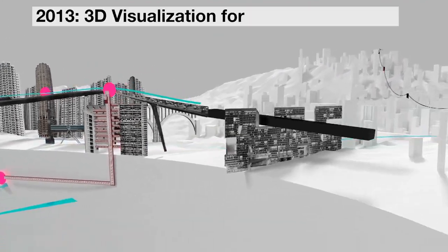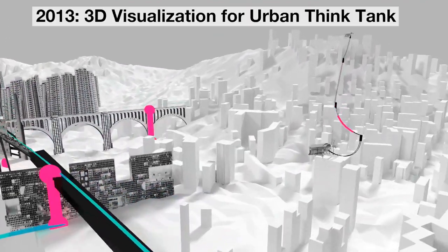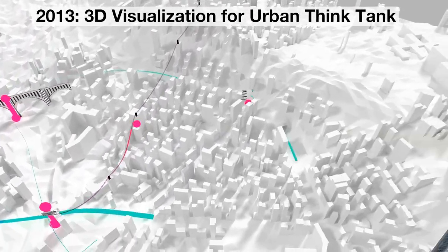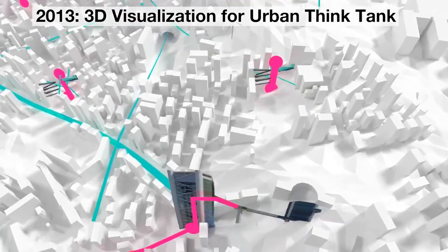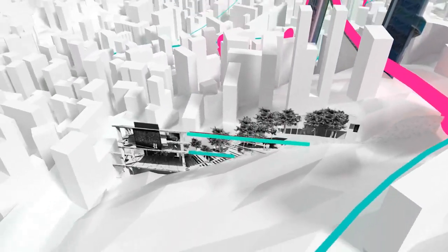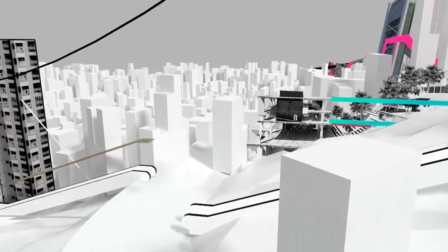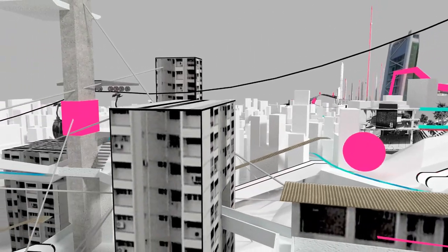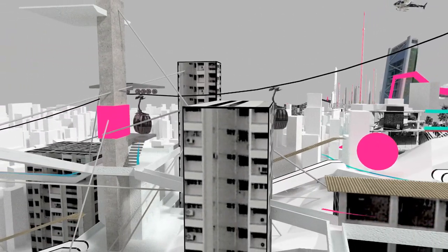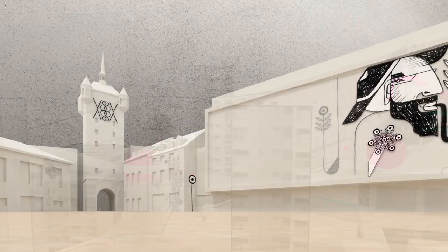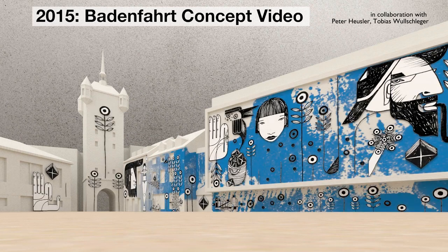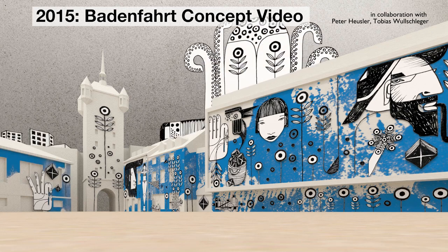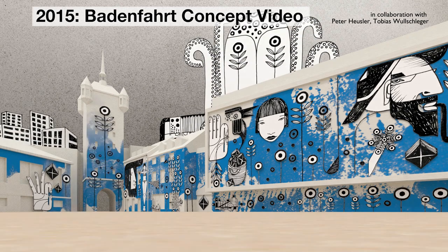This work emerged out of a collaboration with ETH Zurich Urban Thinktanks Studio. It envisions a traffic circulation on multiple layers, integrating elevators and escalators into the public traffic network. The technique using 2D sprites in a 3D scene was also used in a concept video for Badenfahrt 2017.